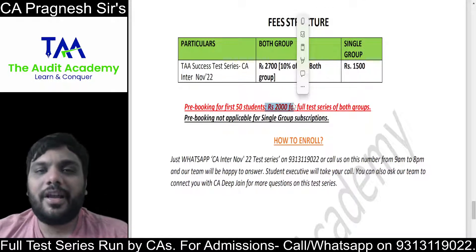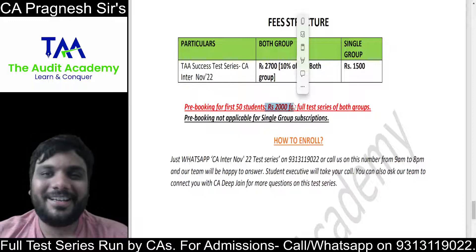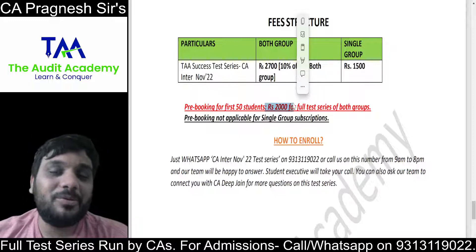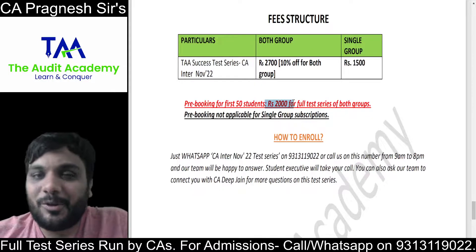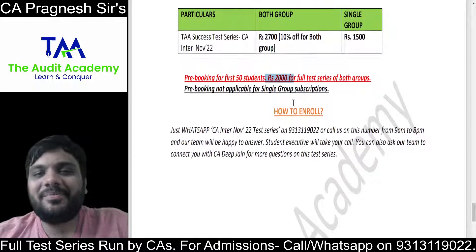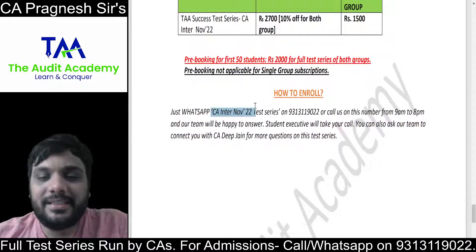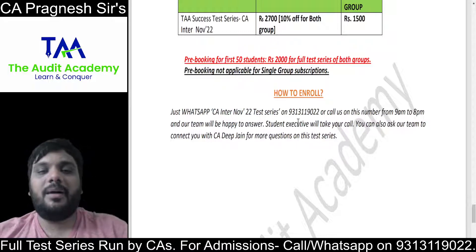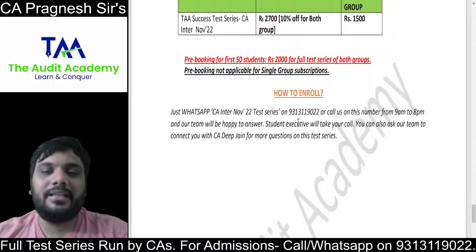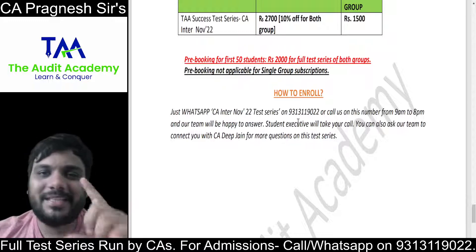Many people in the market trust us a lot, and I think you should develop that trust too. To enroll, simply WhatsApp 'CA inter november test series' to 9313119022 and the full enrollment procedure will be explained to you via WhatsApp.